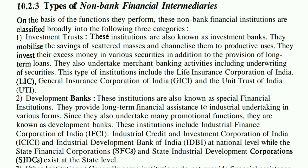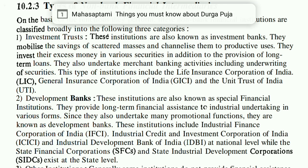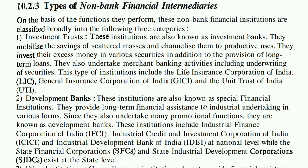The first category is Investment Trust. These institutions are also known as investment banks. This is not a banking organization, but we call them investment banks because they are non-banking financial institutions whose work is like a bank, but not in the same way. They mobilize the savings of scattered masses and channelize them to productive uses.